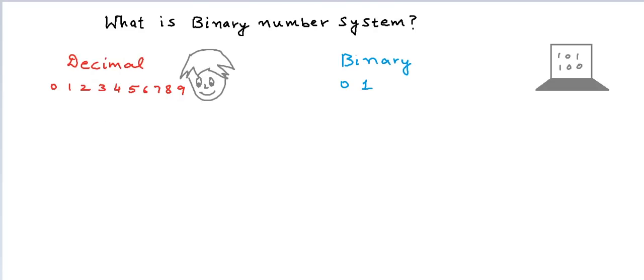If a number system has n digits, we say that the base of the number system is n. So, decimal number system can also be called base 10 number system. And similarly, binary number system can also be called base 2 number system.